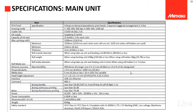Spesifikasinya adalah print head-nya ada 4 yang disusun secara stagger. Untuk drawing mode-nya ini dari 300 sampai dengan 1200 dpi. Terus tintanya menggunakan CS100, CMYK, di mana CS100 ini disuplai dalam bentuk kemasan 2 liter per botolnya. Di tank-nya bisa masuk 3 liter tinta.